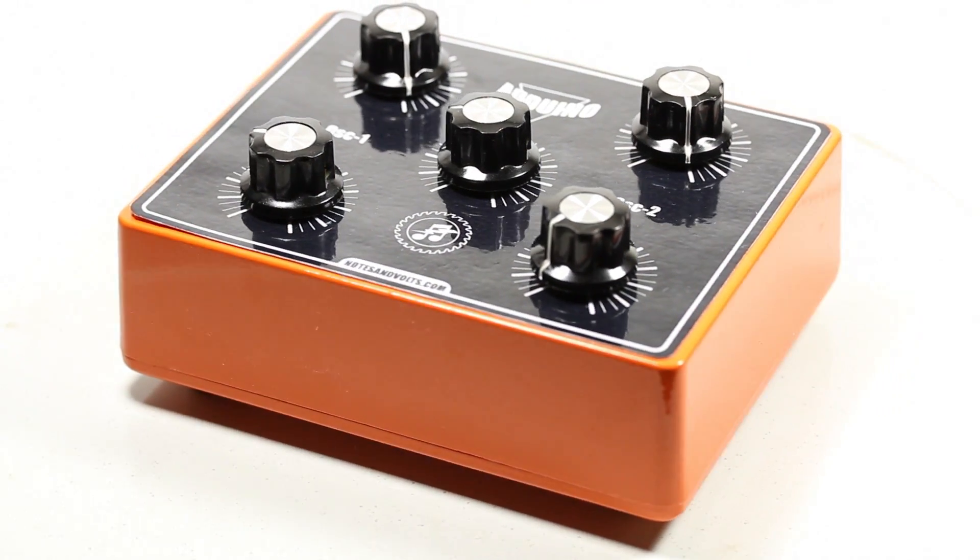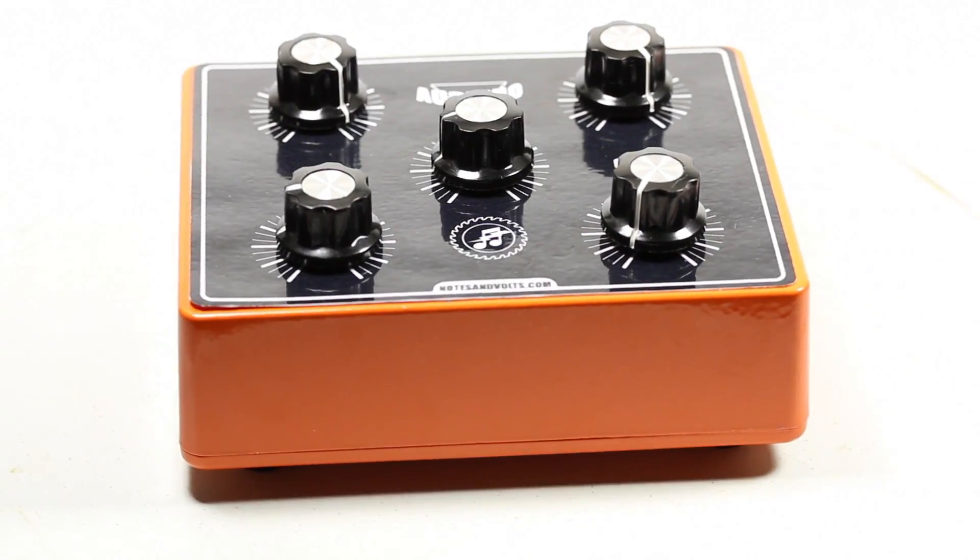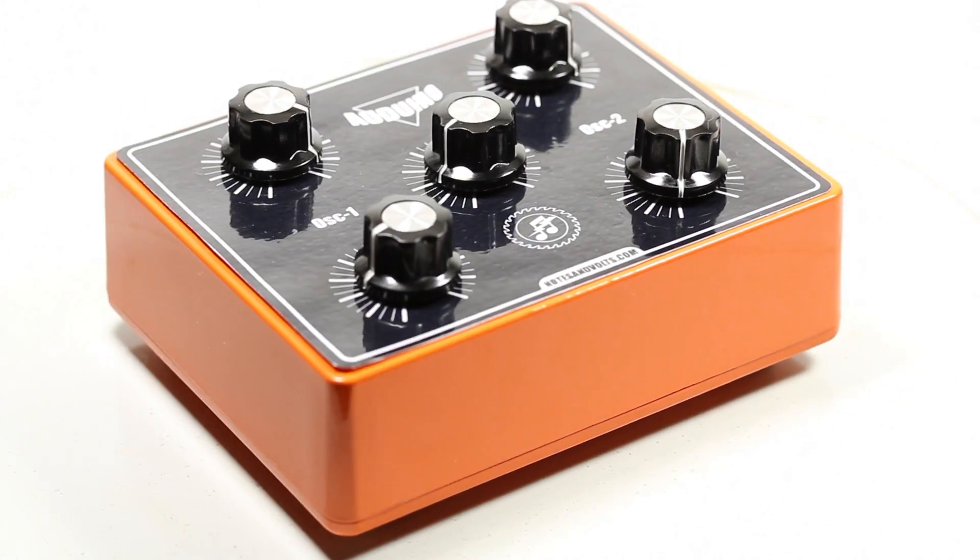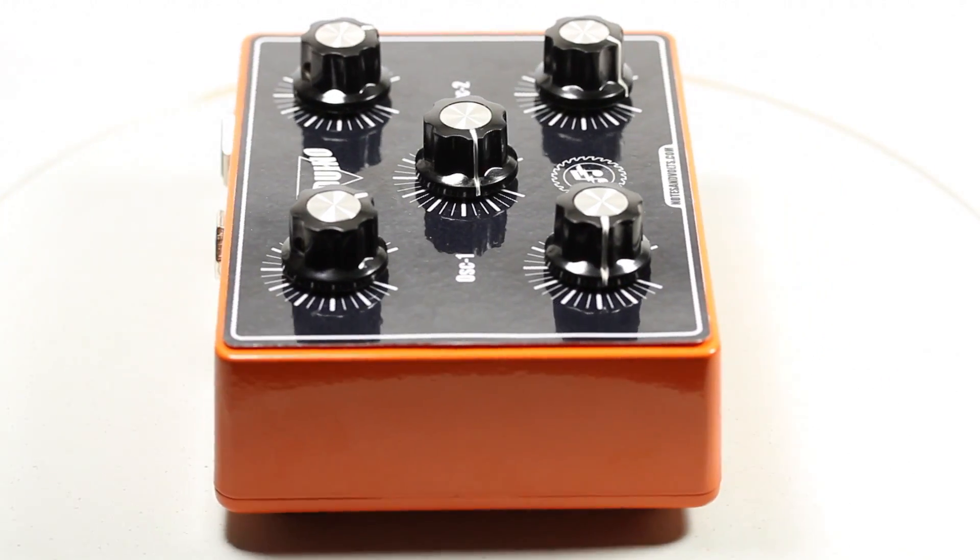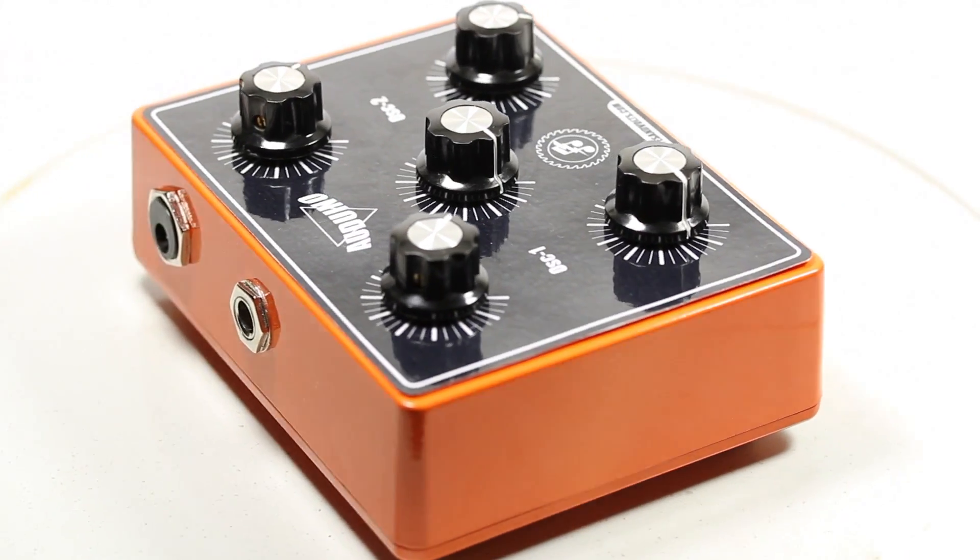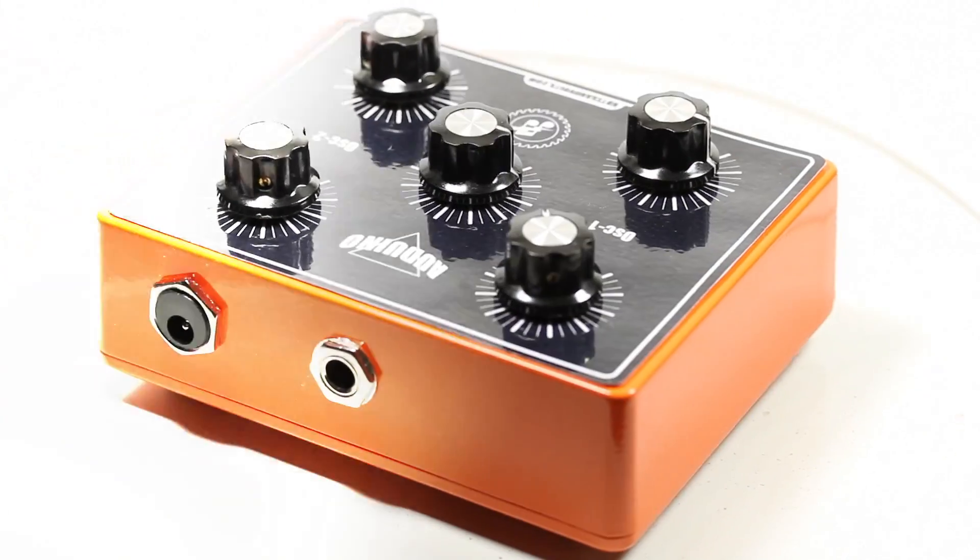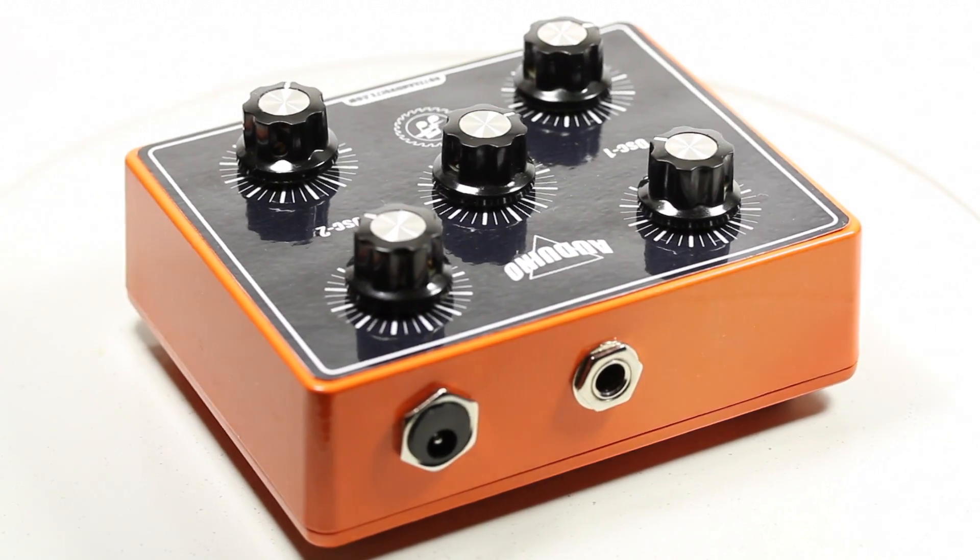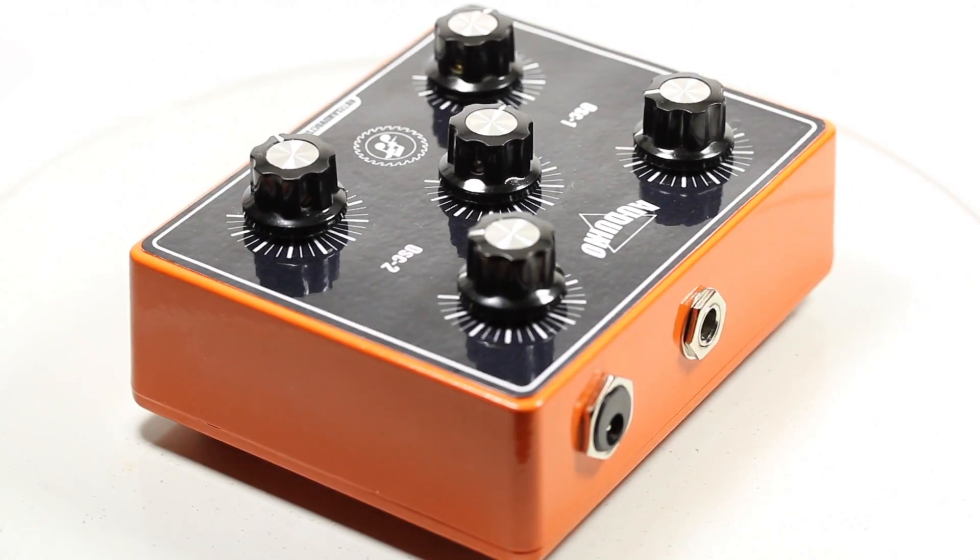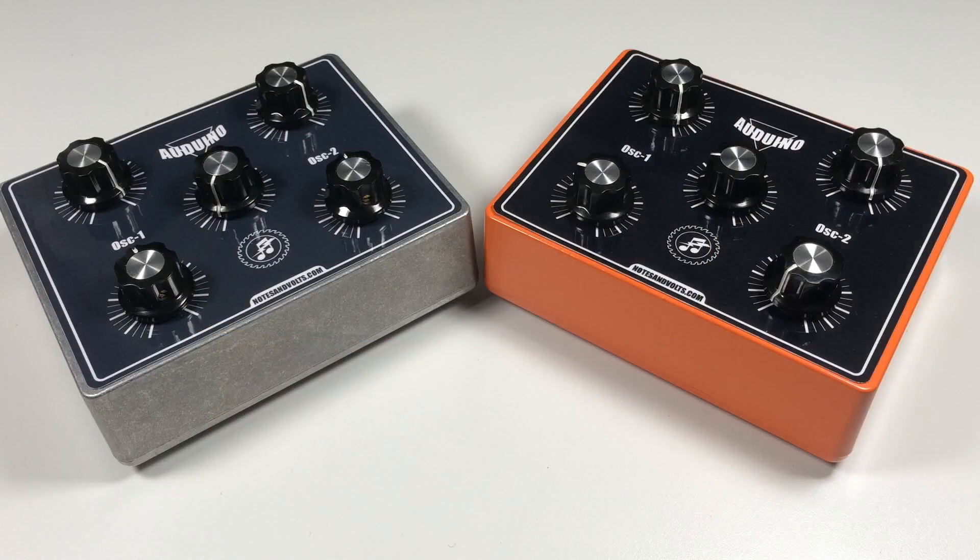In this video we're going to do something really fun. We're going to look at building a permanent version of the Arduino granular synthesizer. I'll leave a link in the description so you can read more about this circuit. But it's basically an Arduino board with five potentiometers and an output jack. I think you're going to find this circuit is so much fun to play with that you're going to want a permanent version.